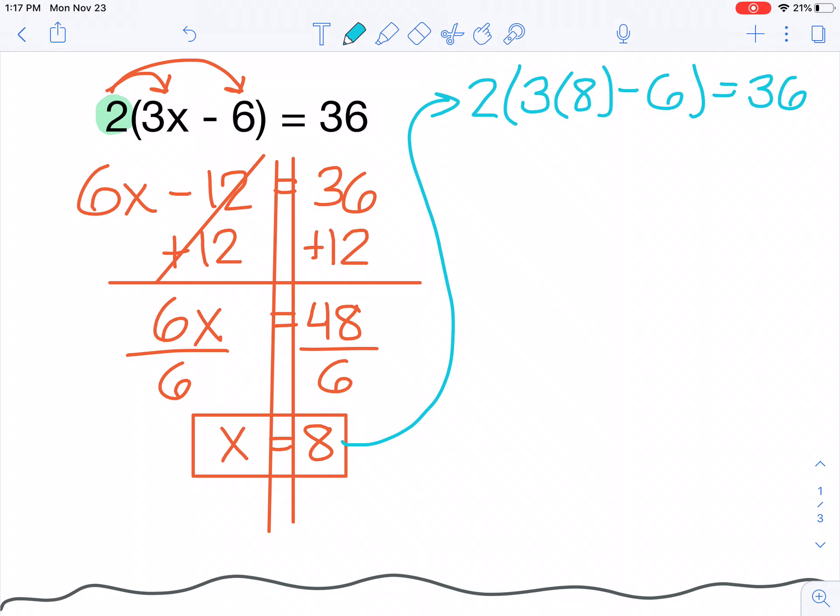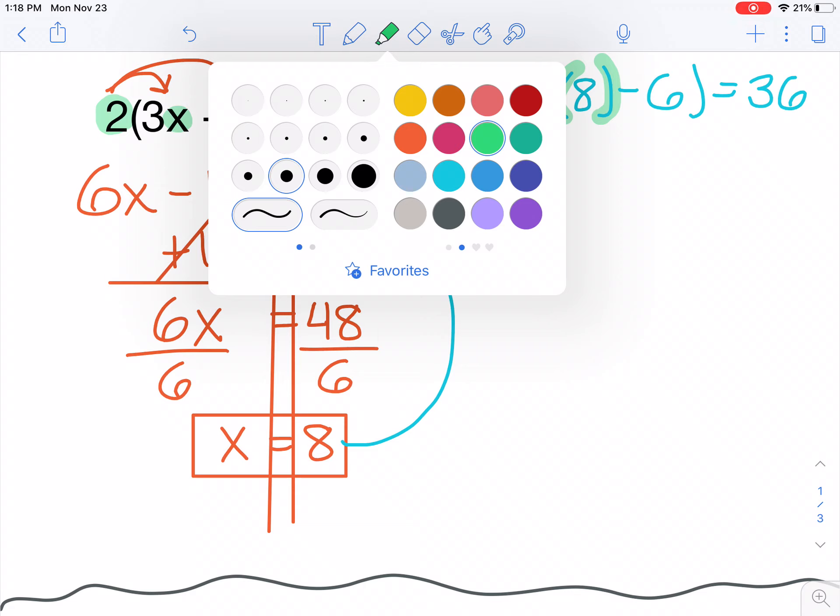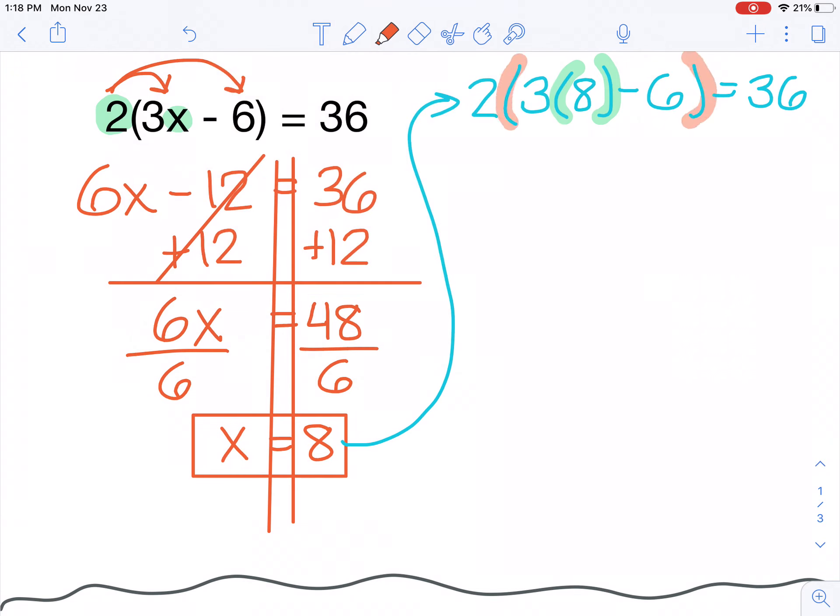So I have 2 times the parenthesis, 3 times 8 minus 6. That should all give me 36. I want you to notice that I have a set of parenthesis around my x variable, so I represented x as the number 8. And I also have the set of parenthesis that I started with in my problem. You do need to have all of those parenthesis included in order for your calculator to understand what you're asking it to calculate. I'm going to type all of this in with all my parenthesis. 3 times 8 is 24. 24 minus 6 would leave me with 18. 18 times 2 would give me a value of 36. So since I've got the same number on both sides of my equal sign, I know that I solved that equation correctly.